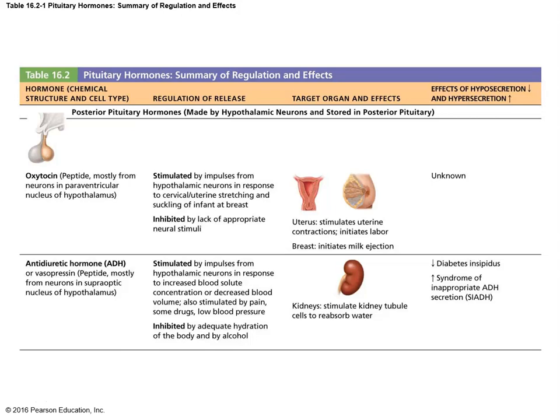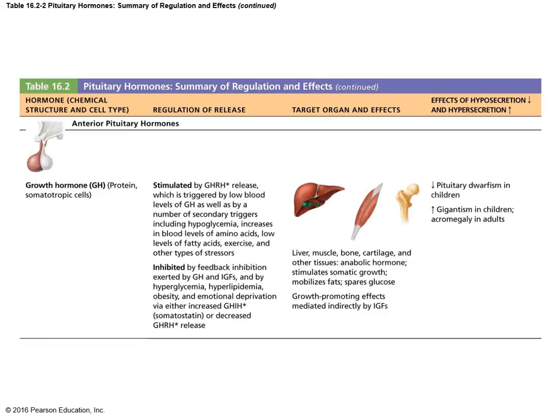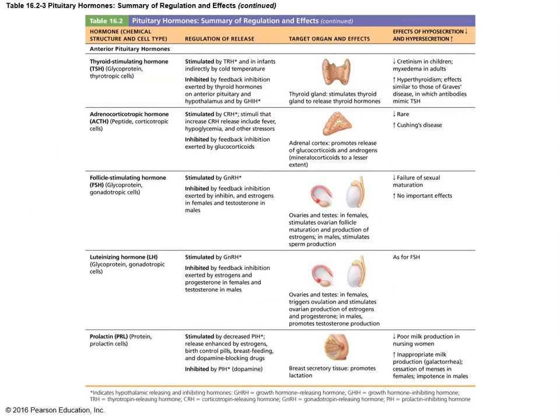The posterior pituitary table repeats what we discussed with oxytocin and ADH. Thyroid-stimulating hormone is another example of the cascade: the hypothalamus tells the anterior pituitary to make it, the anterior pituitary releases it, that stimulates the thyroid, and the thyroid produces thyroid hormone which goes out into the body to affect other cells. It's a large chain reaction — hypothalamus to anterior pituitary to thyroid gland to the rest of the body — a five-step process just to achieve normal metabolism and body function.